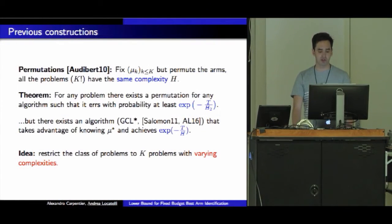What are the previous constructions? The first construction was in a paper by Audibert, Bubeck, and Munos. What they did is fix the different means of the arms but then permute the arms, constructing a class of K factorial different problems, all with the same complexity H. They show that for any such problem and any algorithm, there exists a permutation such that we err with probability at least exponential minus t over H_2. The problem is this class is too restrictive because if I fix the means, I fix the best mean, and there are actually algorithms that can take advantage of knowing μ star and achieve exponential minus t over H.